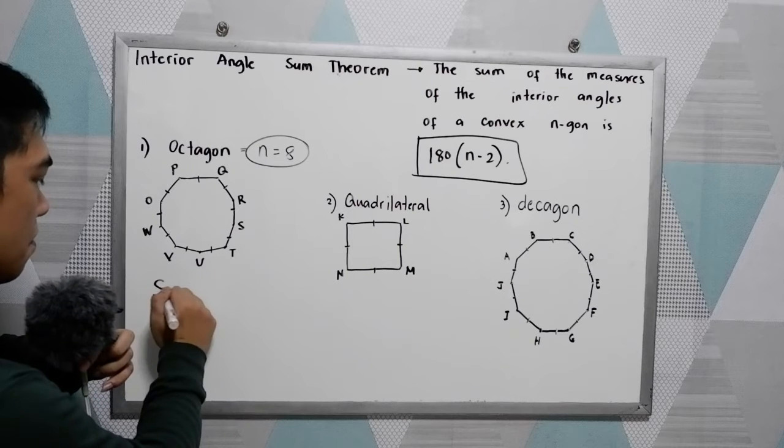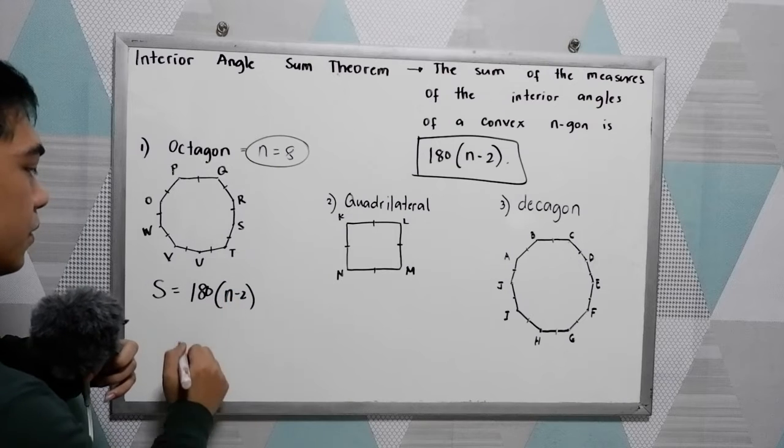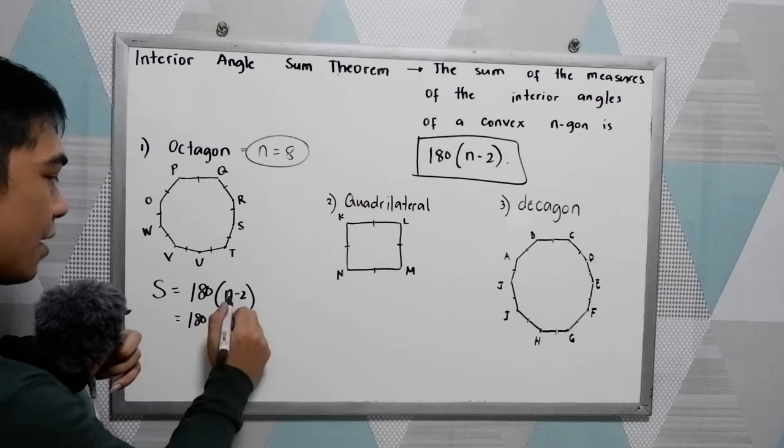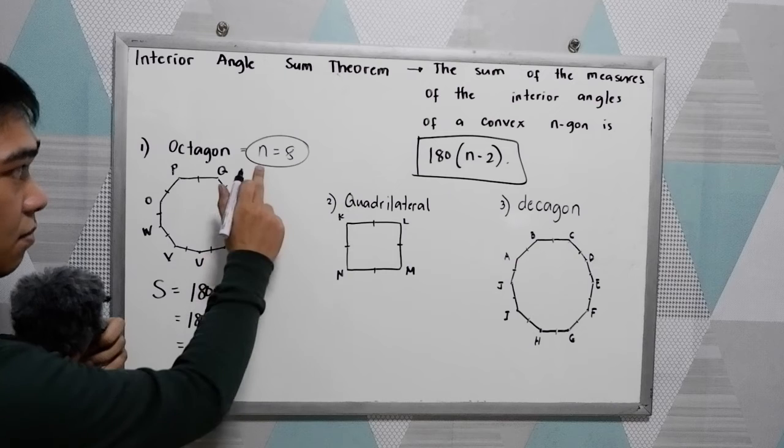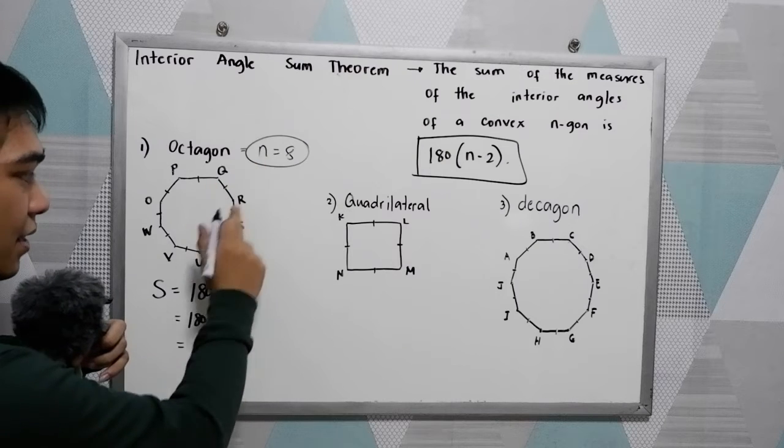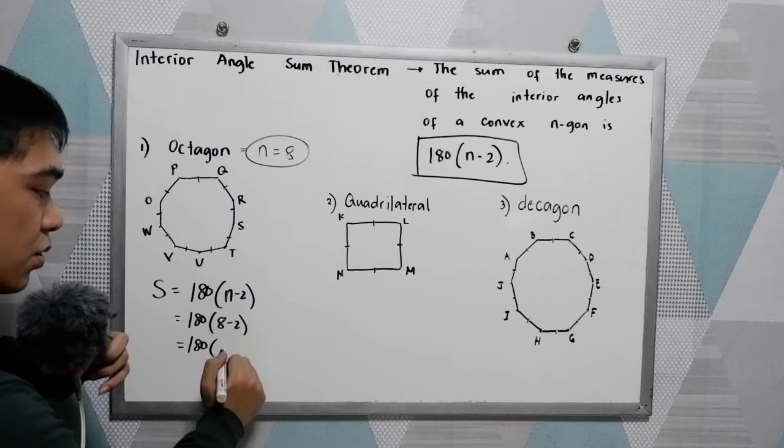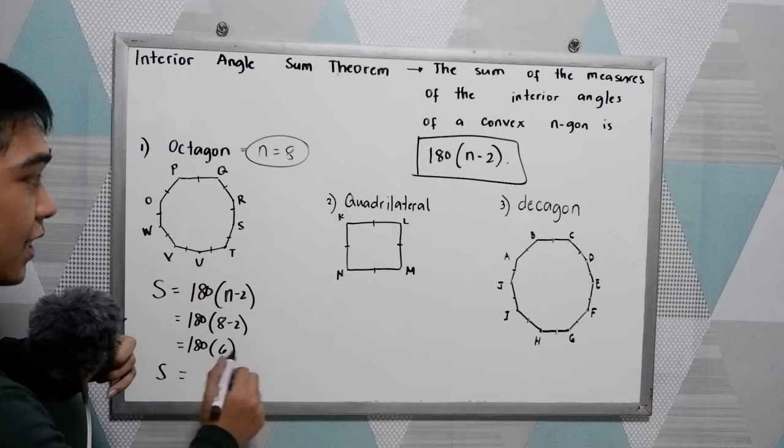So the sum is 180 times n-2. So we have 180 times 8-2. We get 8 by the number of total of the sides. So 180 times 8-2, that is 6. Now we have 180 times 6.